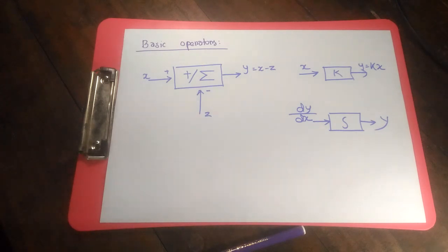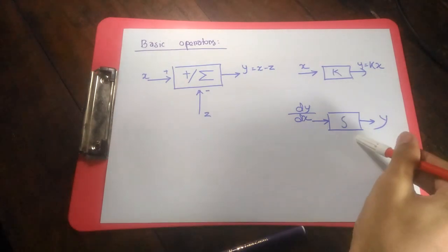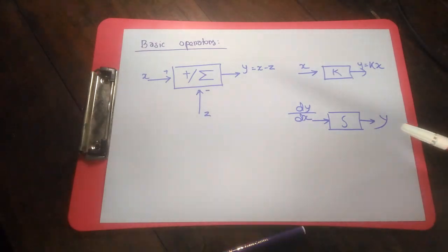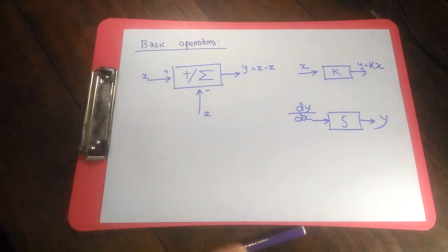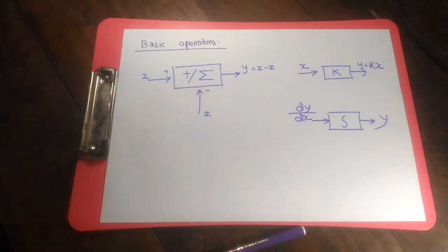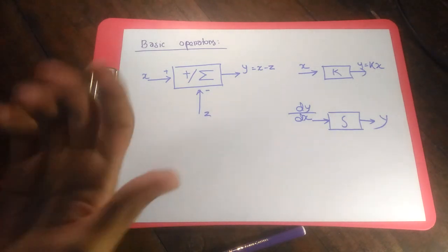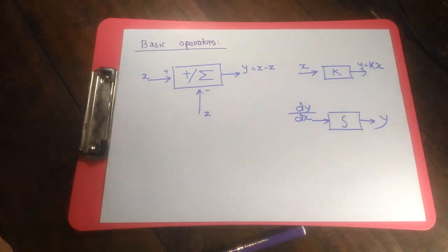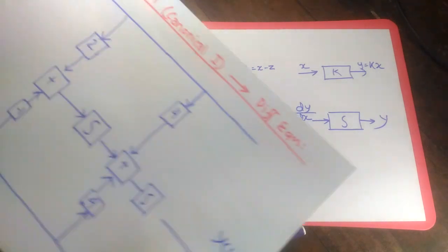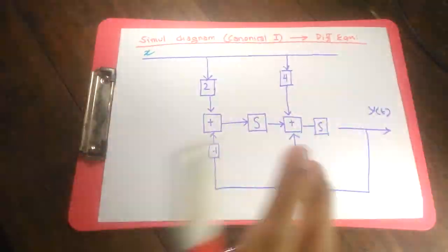And there's going to be an integrator. About the integrator, you always want to think from the left: if the output is Y, then for the integrator the input has to be dY/dX. If the output is dY/dX, then the input had to be the double derivative of Y with respect to X. There are two simulation diagram forms possible: canonical form 1 and canonical form 2.